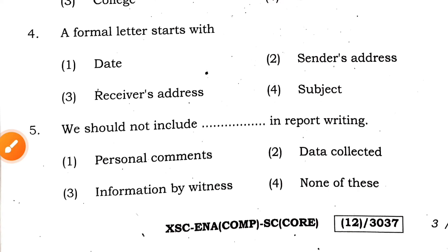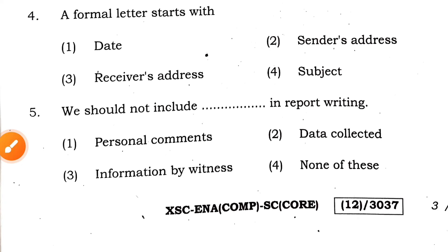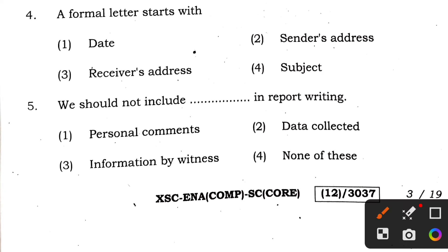Question 4: a formal letter starts with — when we write any formal letter, it starts with the sender's address first, then the date, then the receiver's address, and the subject comes after all three. So the answer is option 2, sender's address.